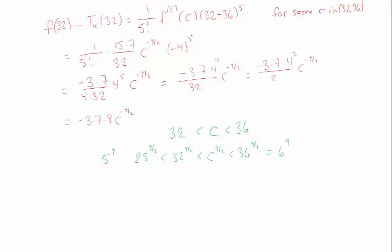So now I have a bound for c to the 9 halves. That's between two numbers that make sense to me, two numbers that I could calculate if I had to without using another Taylor approximation. But what I really want is c to the minus 9 halves. And that's 1 over c, so my inequalities are going to trade places.